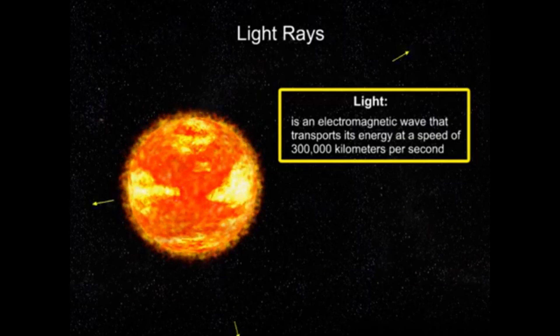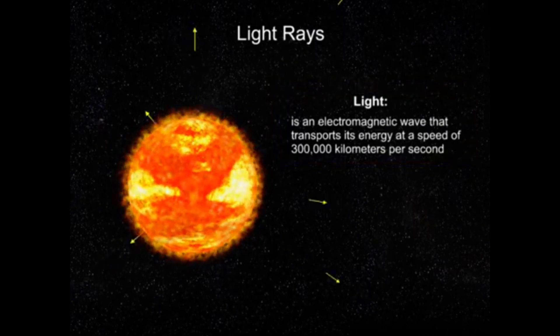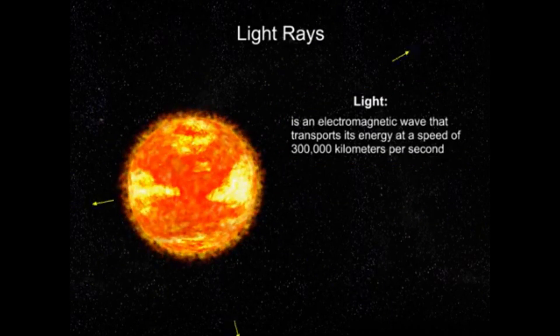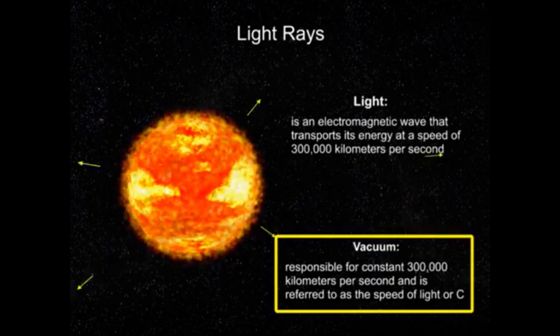Light is an electromagnetic wave that transports its energy at a speed of 300,000 kilometers per second. This constant speed is how fast light travels in a vacuum and is referred to as the speed of light, or C.